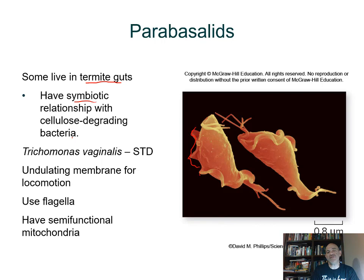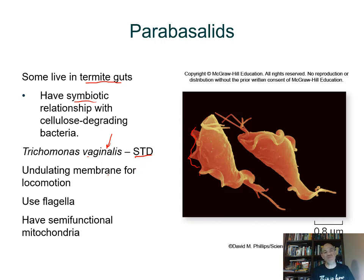Another parabasalid is called Trichomonas vaginalis — the specific epithet gives you an idea of where we find it. It is an STI — sexually transmitted infection — that can cause disease. They have flagella and an undulating or waving membrane that helps them move. Unlike the diplomonads where mitochondria were non-functional, here the mitochondria is semi-functional.